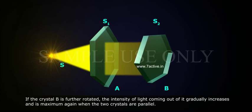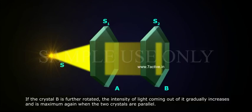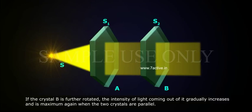If the crystal B is further rotated, the intensity of light coming out of it gradually increases and is maximum again when the two crystals are parallel.